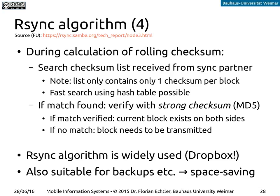If there's no match, it was a false positive and the block still needs to be transmitted. To recap: both synchronization partners can calculate this rolling checksum, but one will only pick one checksum per block — the central one. If that block exists on the other side, the same checksum will still appear even if the block has shifted. If that original checksum appears somewhere in the list received from the other side, we know the block exists on both sides even if it has shifted by some offset. This is widely used, even by Dropbox, and is also suitable for backups where you only need to transfer deltas of data.